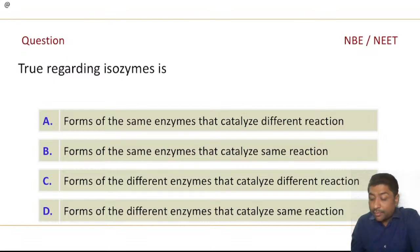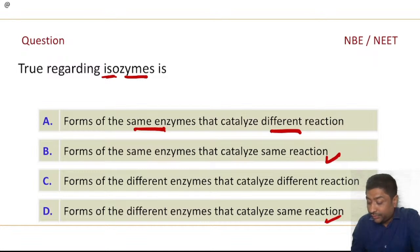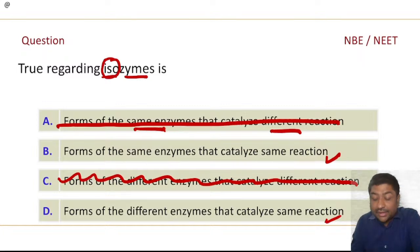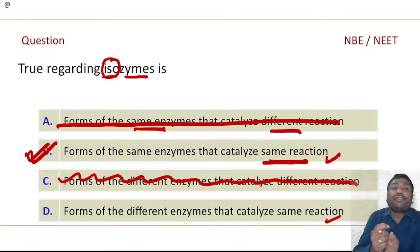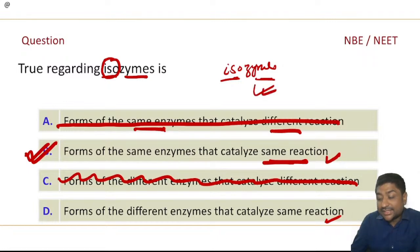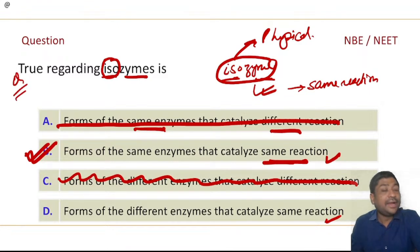What are isoenzymes? Forms of the same enzyme that catalyze different reactions? No — isoenzymes are forms of the same enzyme that always catalyze the same reaction. So options saying 'different reactions' or 'forms of different enzyme' are ruled out immediately. Isoenzymes are forms of the same enzyme that catalyze the same reaction, but they have different physical properties while sharing the same chemical activity. So chemically they act the same, but their physical properties are different. Isoenzymes are a very high-yield topic for your examination.